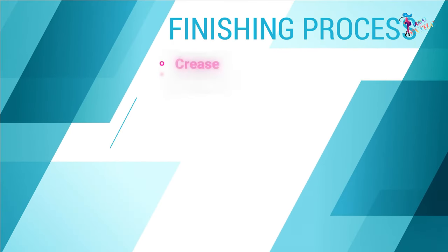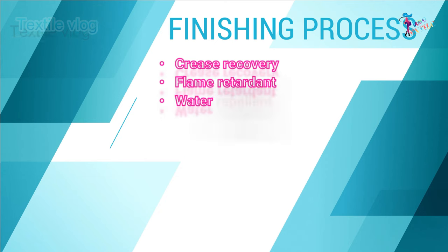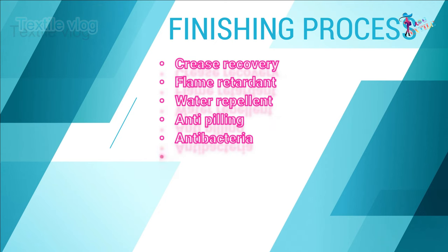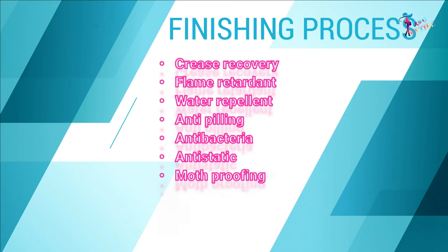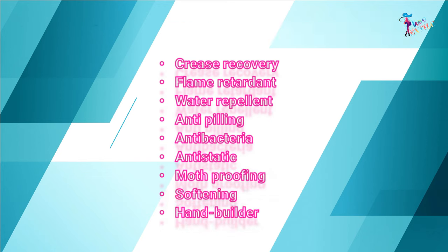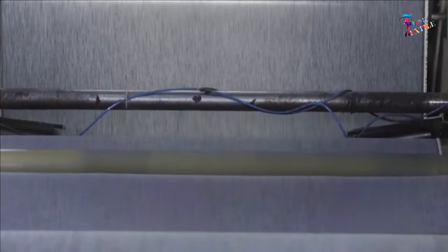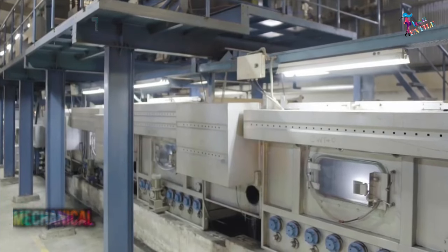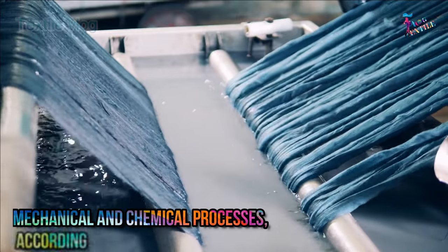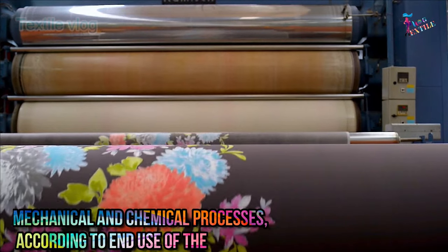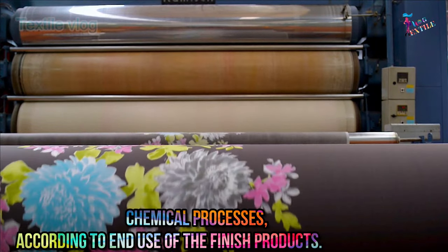In the finishing section, special finishing effects such as crease recovery, flame retardant, water repellent, anti-pilling, antibacterial, anti-static, moth proofing, softening, and hand builder can be added to fabrics by mechanical and chemical processes, according to the end use of the finished products.